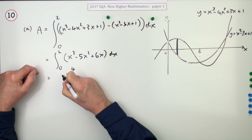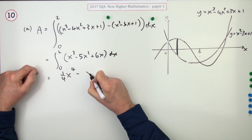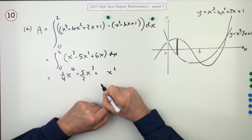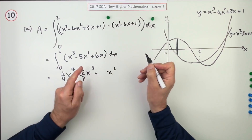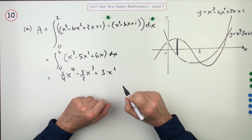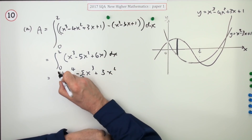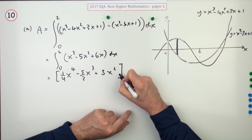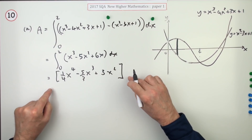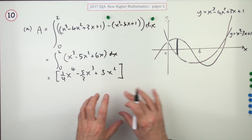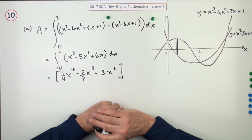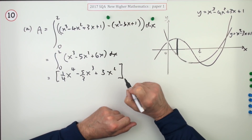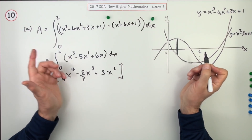So integrate it. Up to 4, divide by 4. Up to 3, divide by 3. Up to 2, divide by 2 — you could write 6 over 2, but it's better to jump straight in with 3. That's what's to be evaluated. You can put in +C if you like, but when you do the evaluation it'll be (something + C) take away (something + C), so the C's cancel anyway. There's no need to put it in, and you're certainly not penalised for leaving it out.